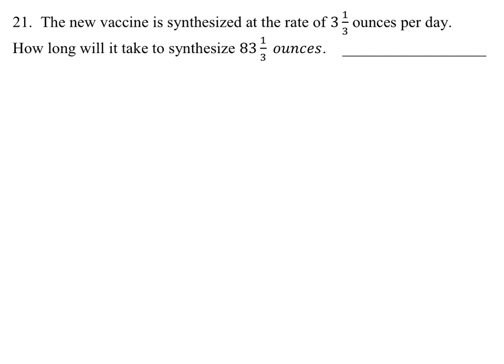If we take the total number of ounces, which is 83 and 1/3, and if we divide it by—well, this is how many ounces every day—that will tell us how many days it will take to synthesize this many ounces. I don't exactly know what that means, but maybe some of you do.